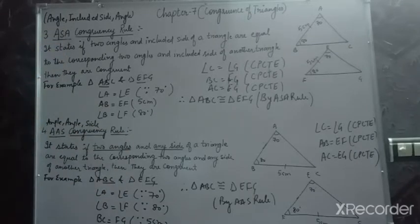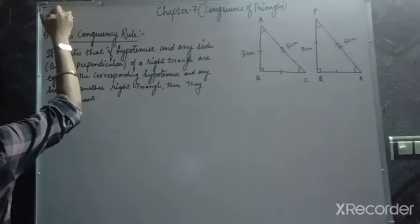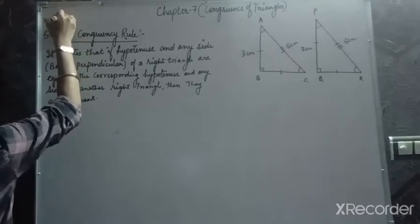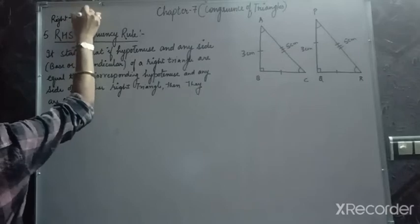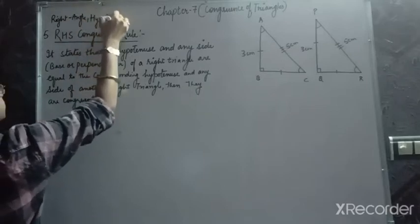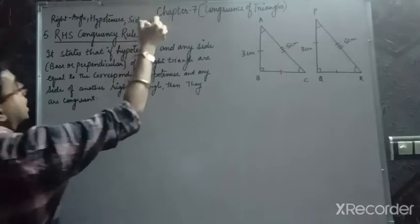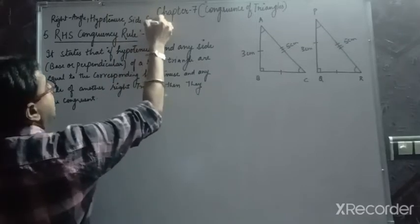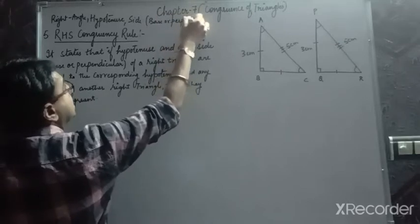Let's move on to the last congruency, which is RHS. RHS is not right-hand side — it stands for right angle, hypotenuse, and side. This side can be the base or the perpendicular; it doesn't matter, we are considering any side.